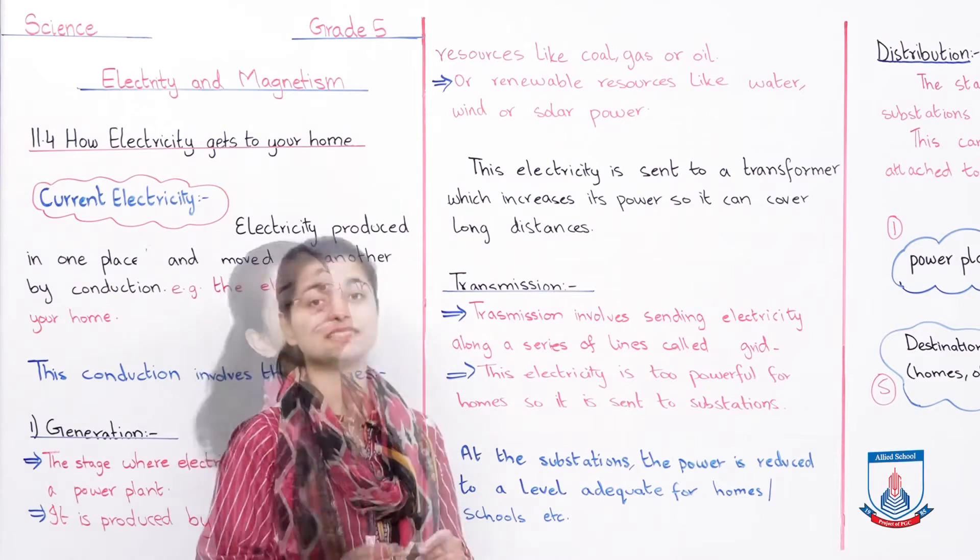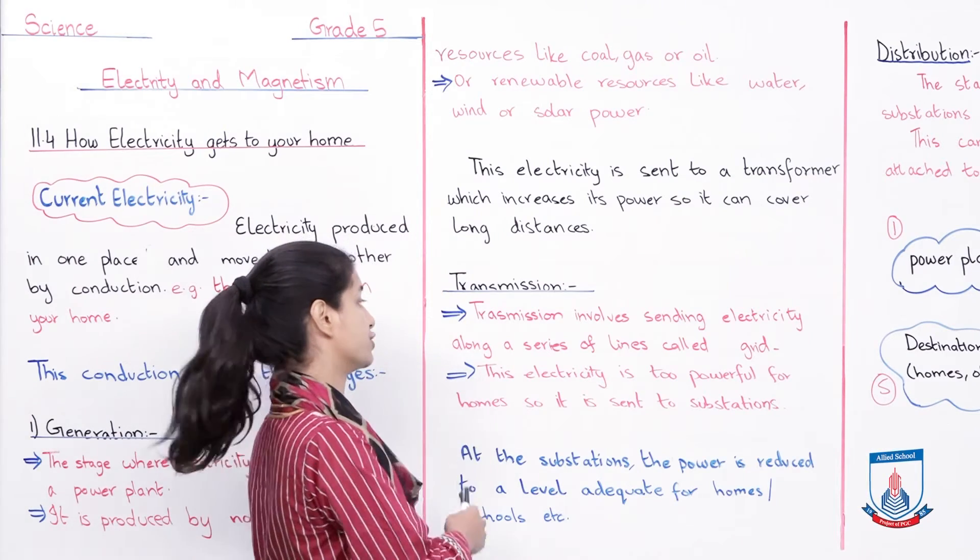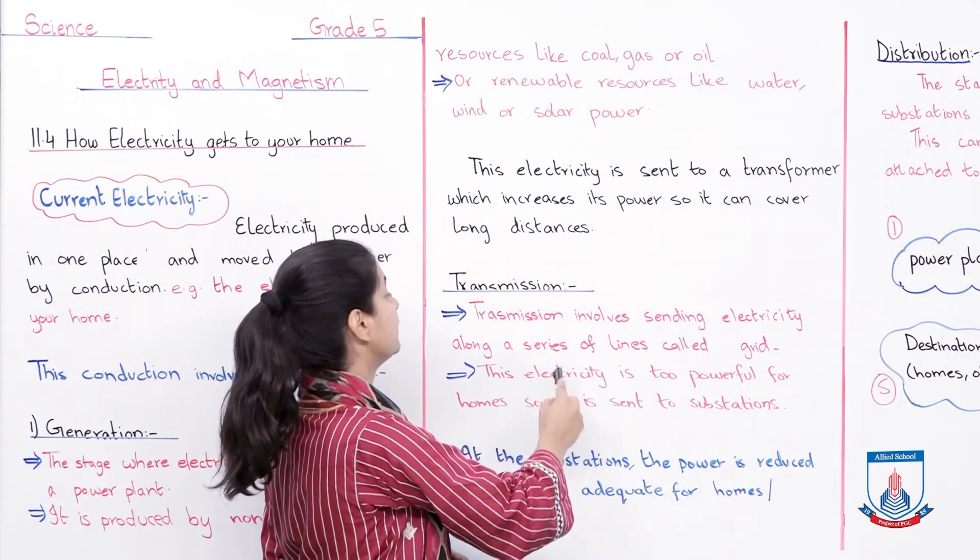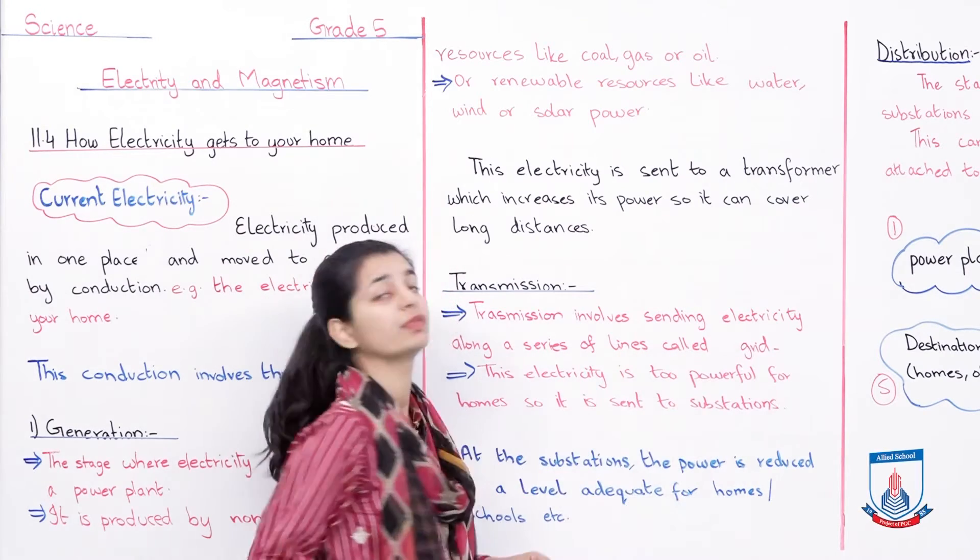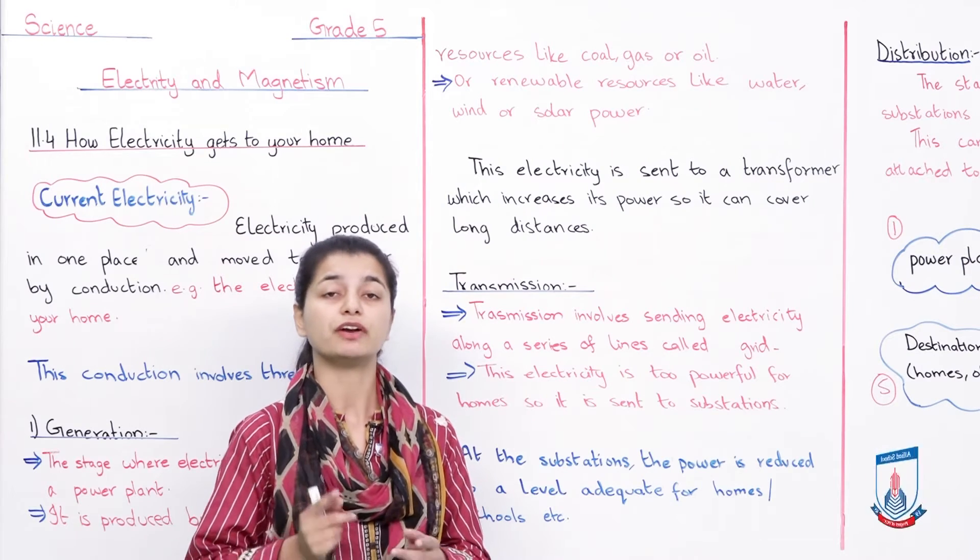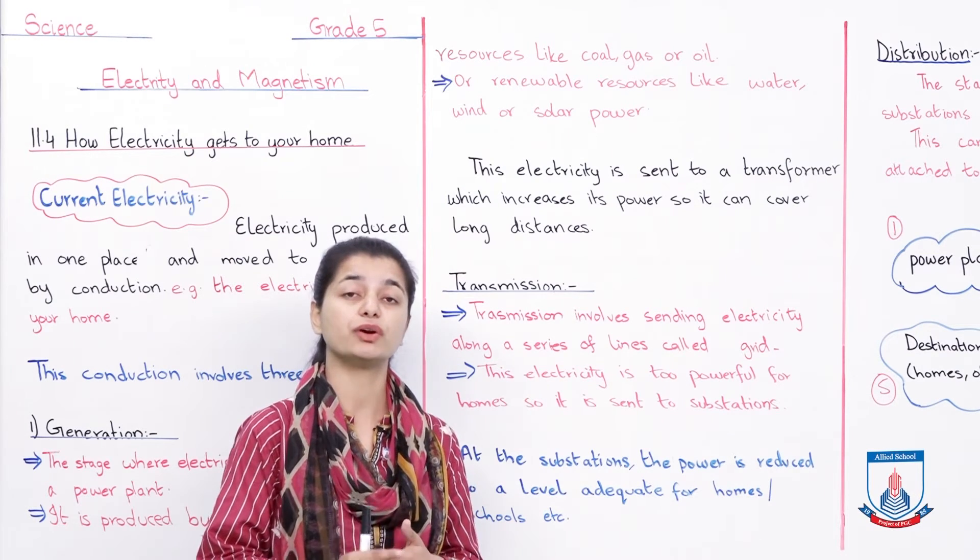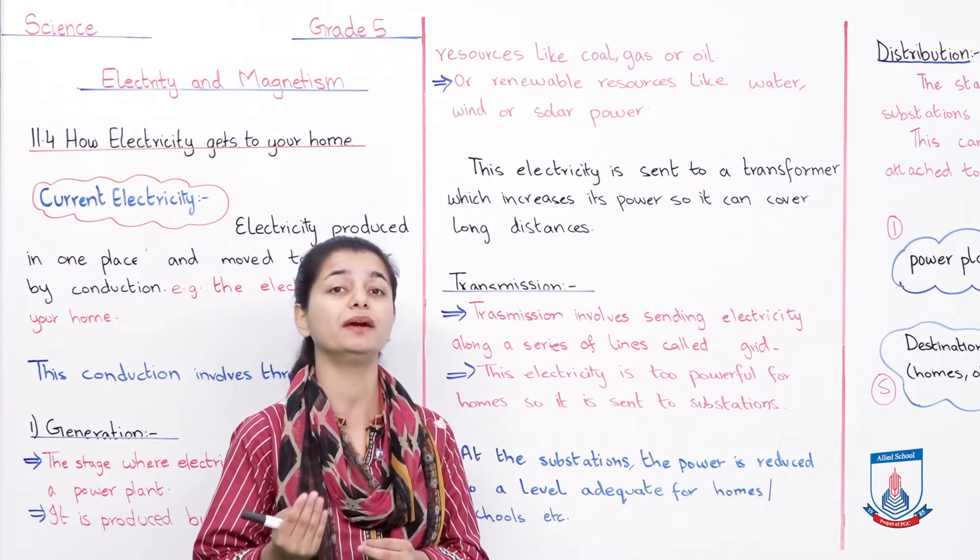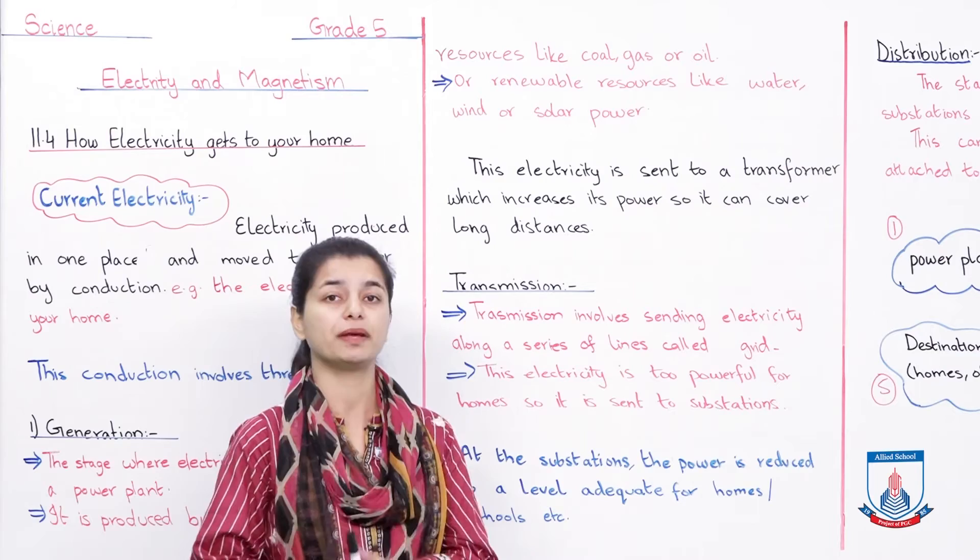Now let's start with our second stage, which is transmission. Transmission involves sending electricity along a series of lines called grid or electric grid. So in transmission, you send electricity through a series of lines called electric grid.